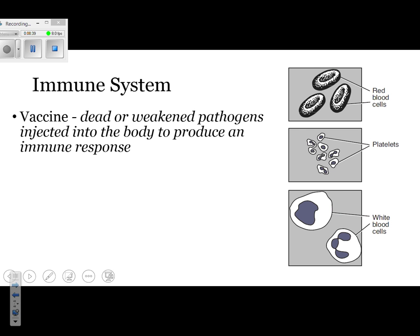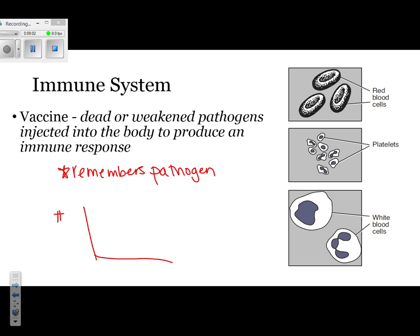Next we have vaccines. Probably most people have been vaccinated. A vaccine has a dead or weakened pathogen inside of it, and once you get a vaccine your body remembers the disease. The first time you get exposed you produce a small number of antibodies, but the next time you get exposed you can produce a lot of antibodies. Since it remembers the pathogen, you don't get sick.